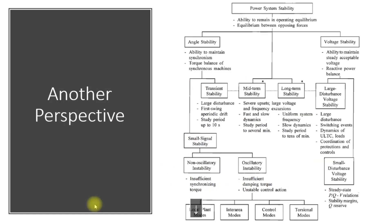Looking at another perspective of the same classification: power system stability is the ability to remain in equilibrium — equilibrium between forces. We have angular stability and voltage stability. Angular stability is the ability of the system to maintain synchronism; different generators in a power system should remain in synchronism and should not go out of step. Voltage stability is the ability of the system to remain within an acceptable limit of voltage range following a disturbance.